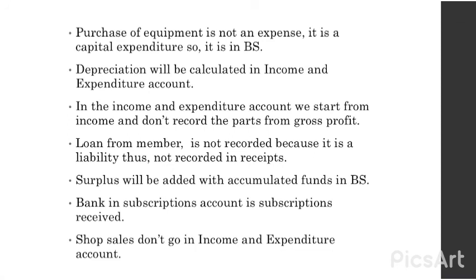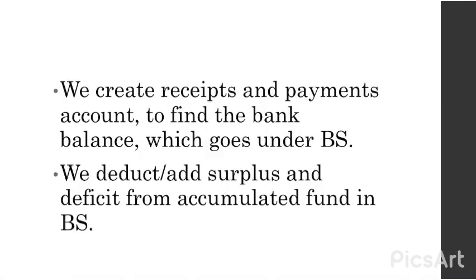Shop sales don't go in the income and expenditure account — they go in the receipts and payments account. We create the receipts and payments account to find the bank balance, and that bank balance goes under the balance sheet. If it's a positive value, it is bank and goes under current assets. If it is a negative balance, it is a bank overdraft, which goes under current liability.